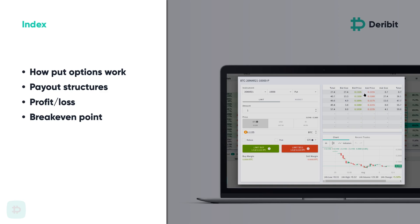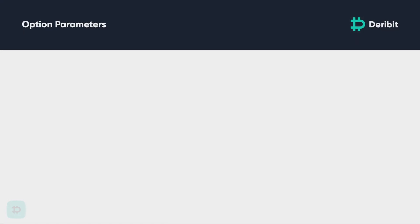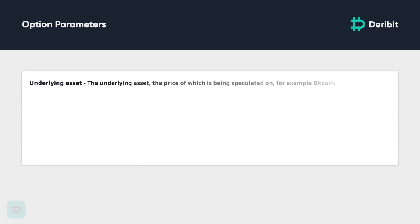Let's have a brief recap of the five basic parameters that make up an option contract. First, the underlying asset — the asset whose price is being speculated on, for example Bitcoin. The option type: whether the option is a call or put, that is whether the option gains intrinsic value if the underlying asset increases or decreases.